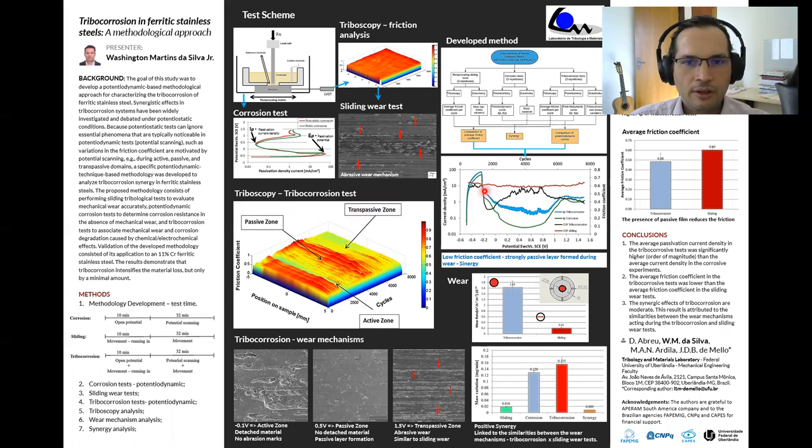In this graph, we have the average of friction measurements plotted in the potential dynamic curve. It is clear that the friction decreases when passive film is formed in comparison to the sliding wear tests.